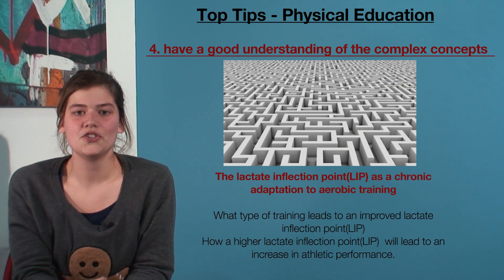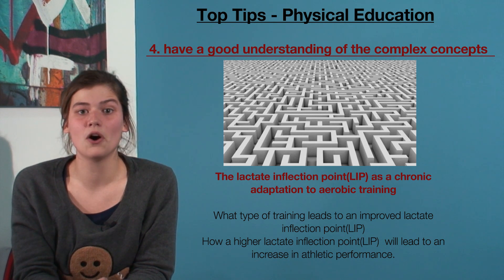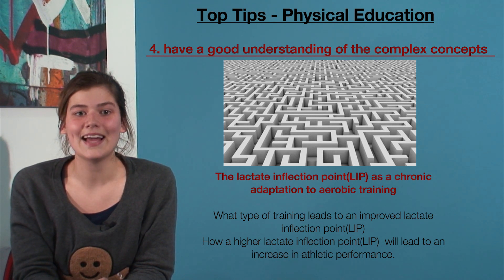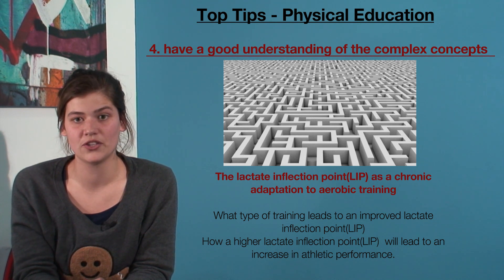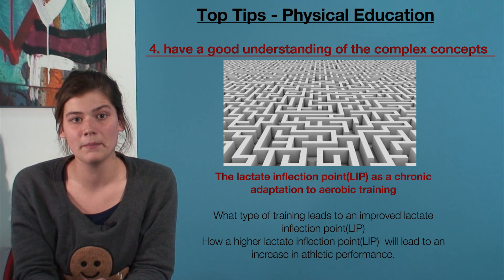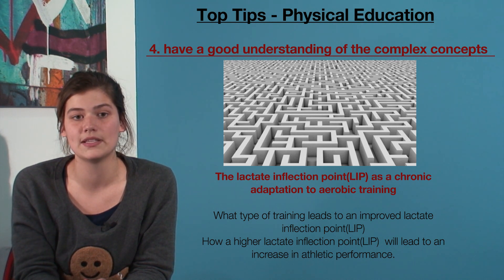Tip 4: for students striving for top scores, you need to have a good understanding of the complex concepts. In particular, the lactate inflection point as a chronic adaptation to aerobic training. For this, you'll need to know what type of training leads to an improved LIP and how a higher LIP will lead to an increase in athletic performance.